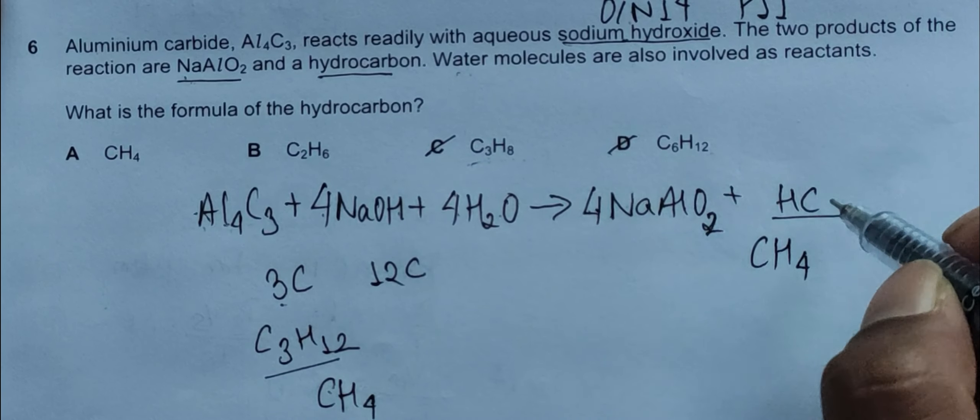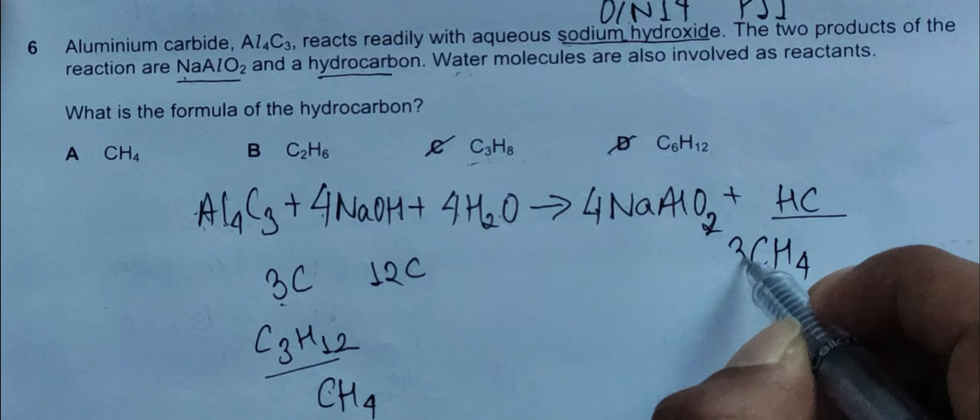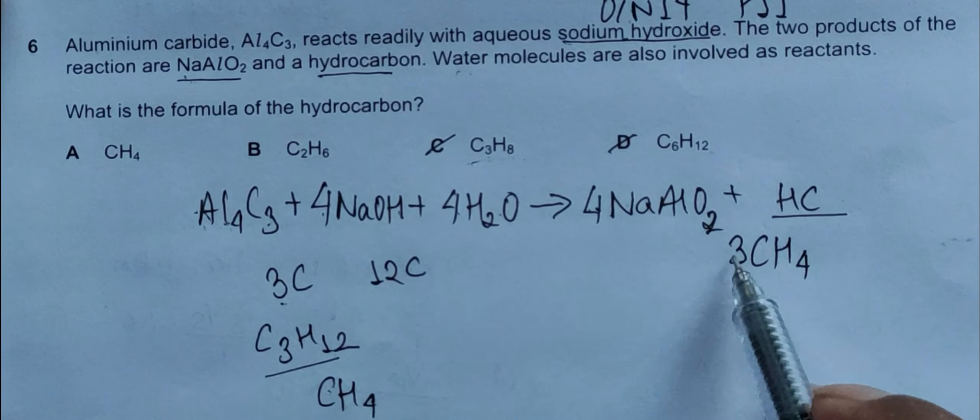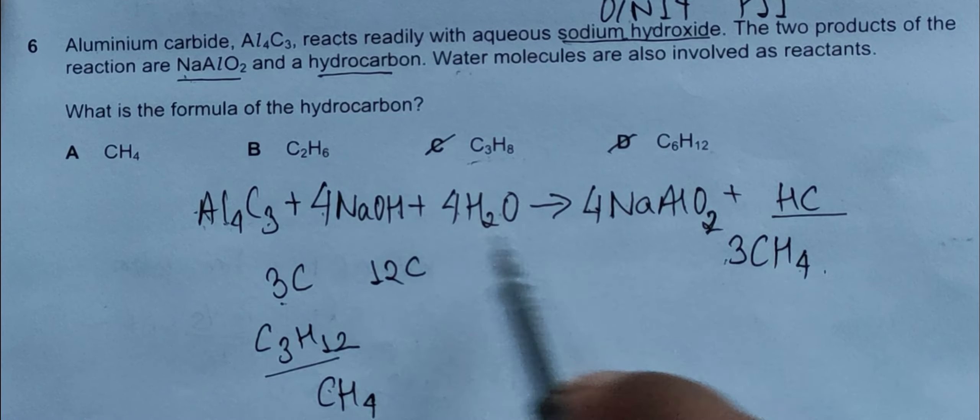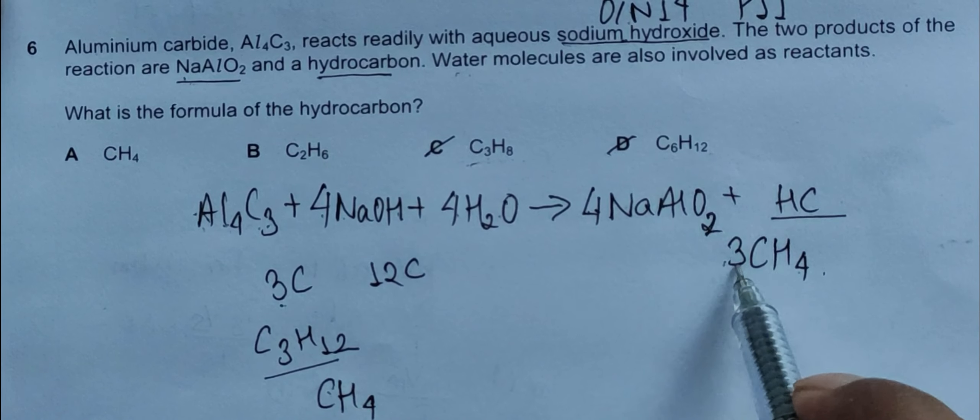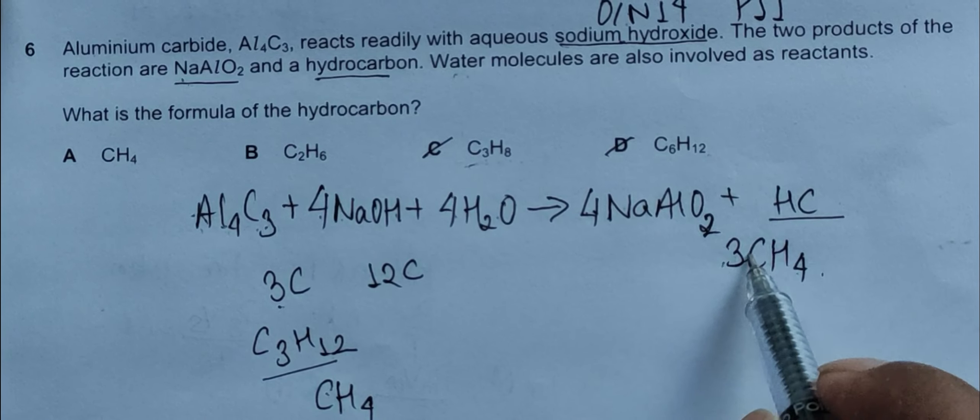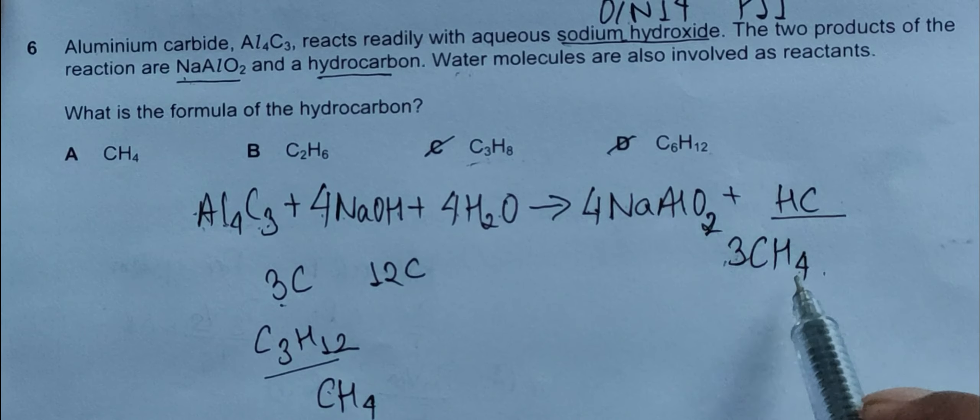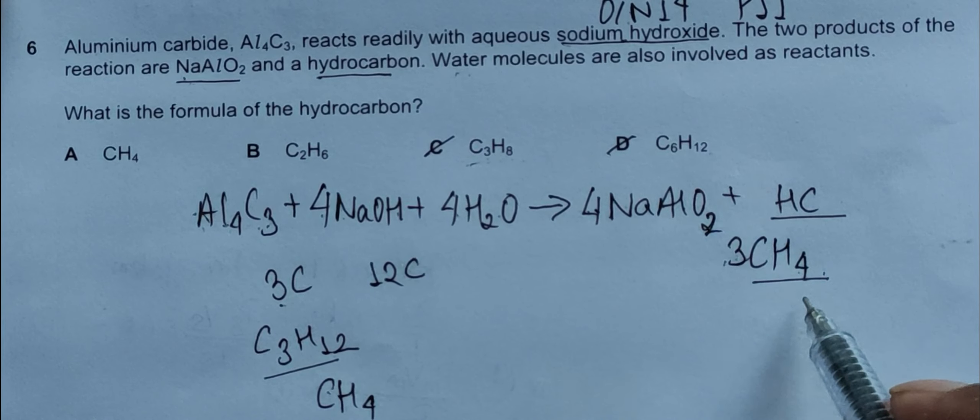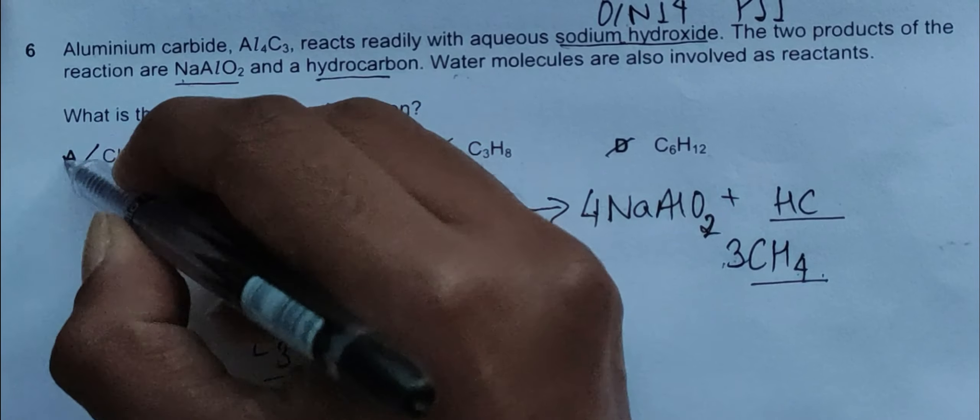If we try to balance this, if we add three here, this balances because we have three carbon in reactants and twelve hydrogens in reactants. Doing this, adding three to the stoichiometric value balances this equation perfectly. So this verifies methane is our hydrocarbon and A is our correct answer.